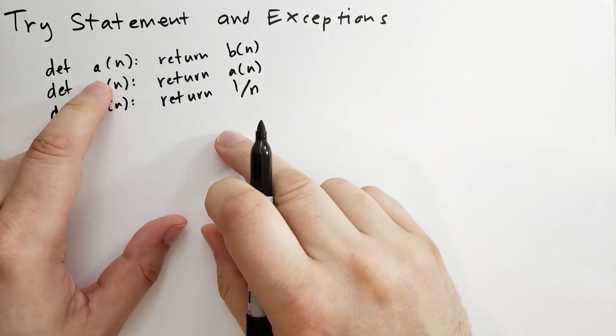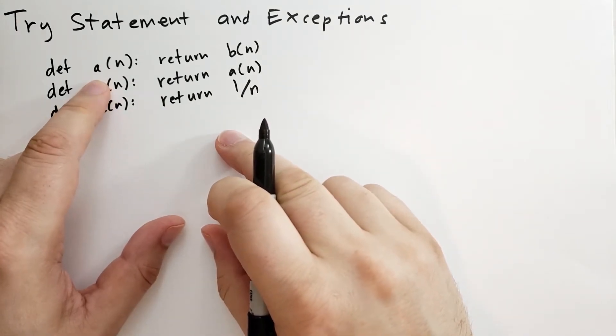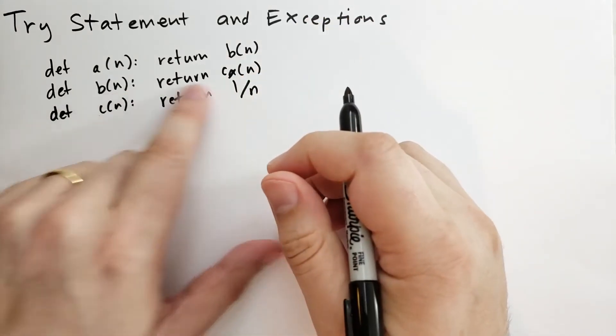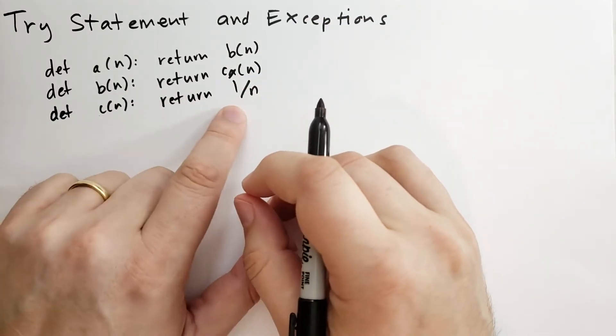If I were to call a of n with, let's say, a value like 5, then it would call b of 5, and b of 5 would call, oh, this is supposed to be c of n. b of 5 would call c of n, and then c of n would return 1 fifth.